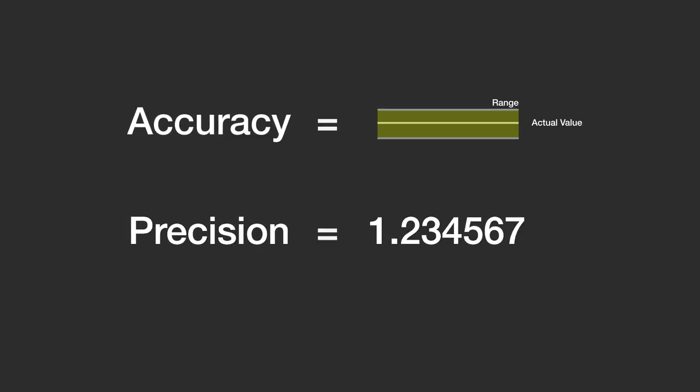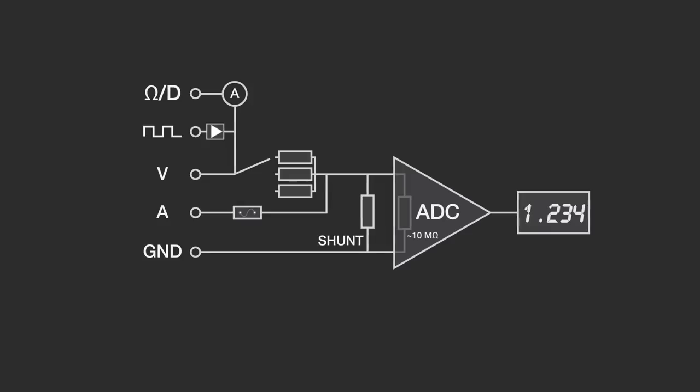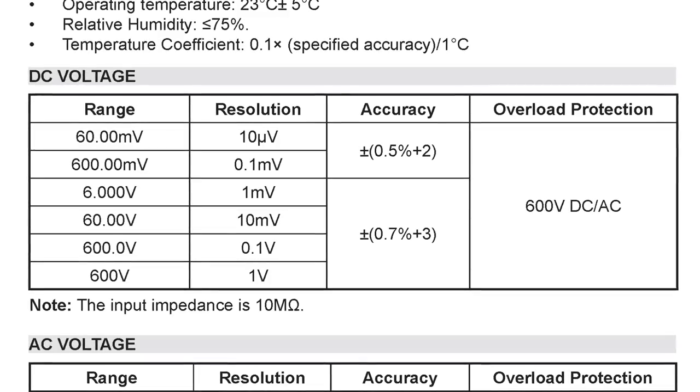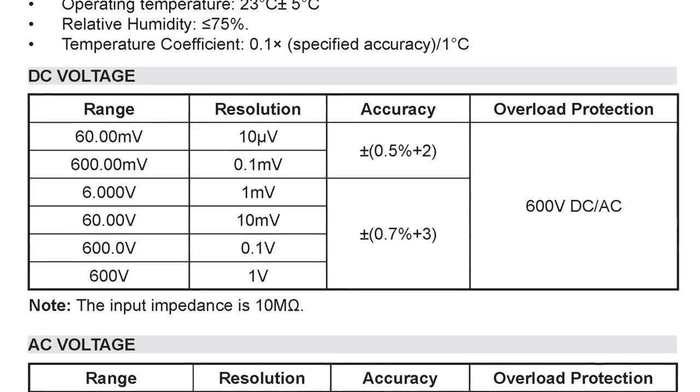While related to digits, accuracy depends on the analog-to-digital converter and the components that sit in front of it. Once again, we look to the datasheet to see how well a DMM can measure a signal.